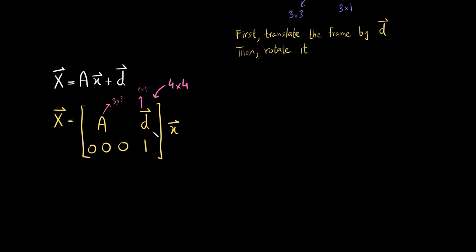Now we have a 4×4 matrix, and we multiply it by small x to get capital X. But wait — if this is a 4×4 matrix, then small x cannot be a 3×1 vector, because the dimensions would not allow multiplication. And yes, that is exactly the case. So when we use this specific form — where we have combined the rotation matrix and displacement vector into one matrix — we need to adjust the vectors accordingly.